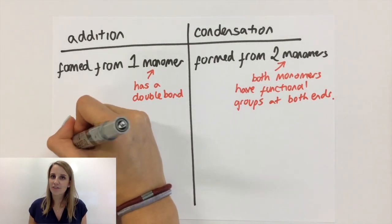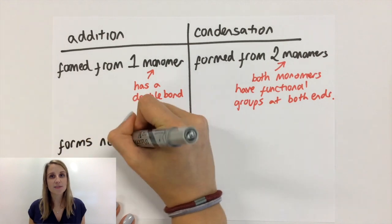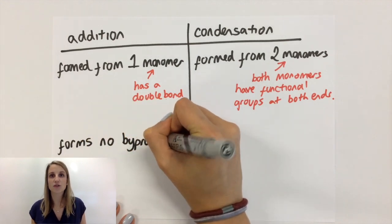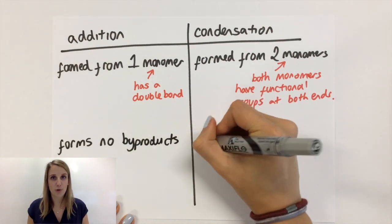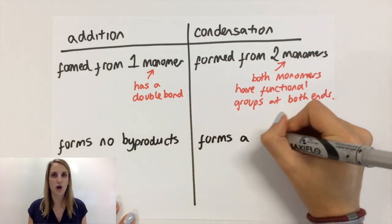The other big difference between the two different types is whether it forms byproducts or not. In addition polymerization, you get no byproducts. Everything goes into the product.